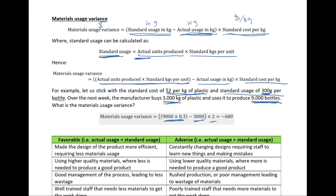This gives us an adverse variance of $600, meaning we expected to use 2,700 Kg to produce 9,000 bottles but ended up using 3,000 Kg — more than expected. That's a bad outcome, so the variance was adverse. But as with all variances, we can't just say it's bad because the variance was adverse or good because it was favorable — we need to analyze why it was adverse or favorable before we can give a final conclusion.